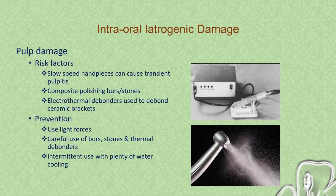Pulp damage: risk factors include slow-speed handpieces which can cause transient pulpitis, and composite polishing burs and stones which generate heat and damage the pulp. Electro-thermal debonders used to debond ceramic brackets also have an effect on the pulp. To prevent pulp damage, it is advisable to use light forces, careful use of burs, stones and thermal debonders, and intermittent use of burs with plenty of water cooling.